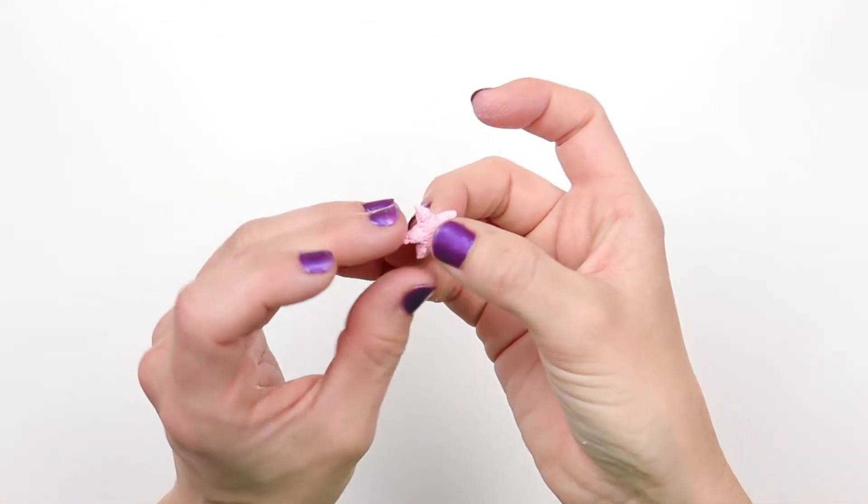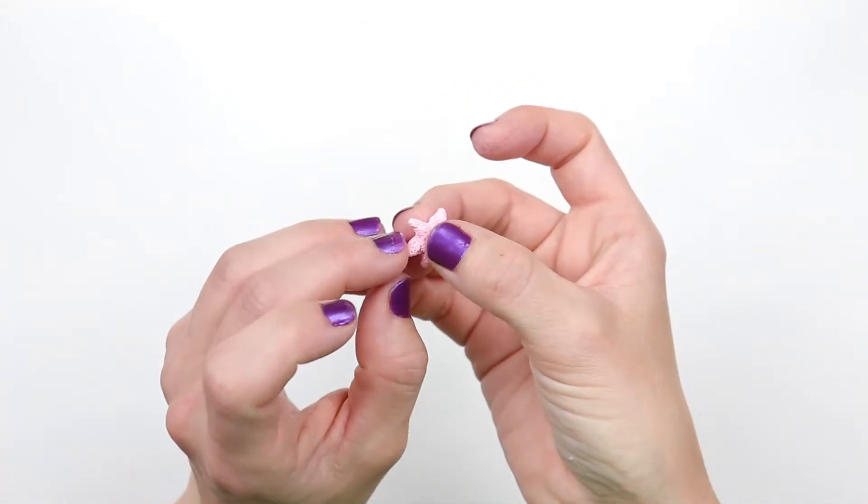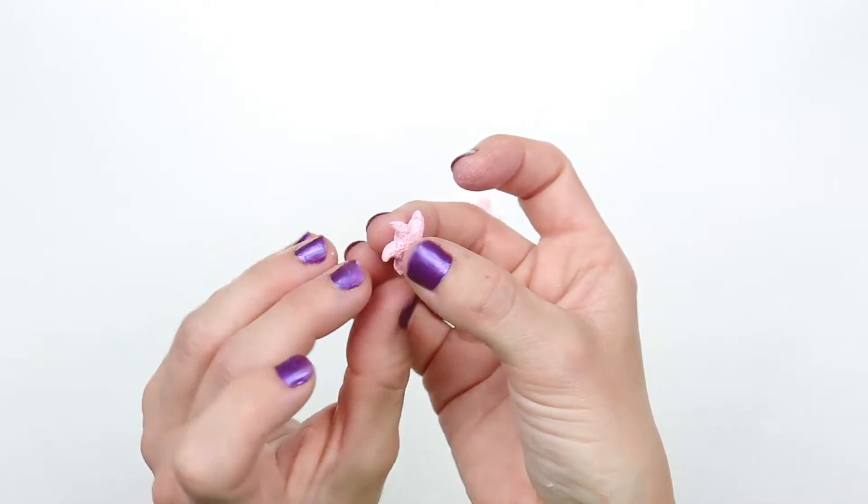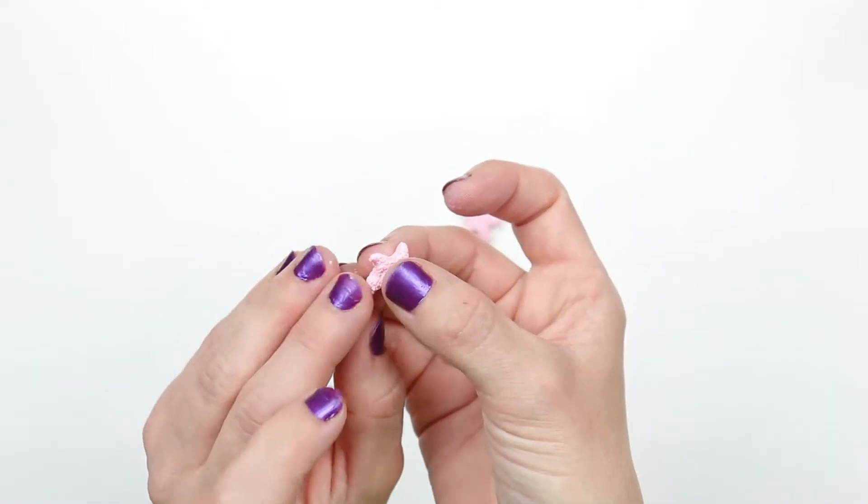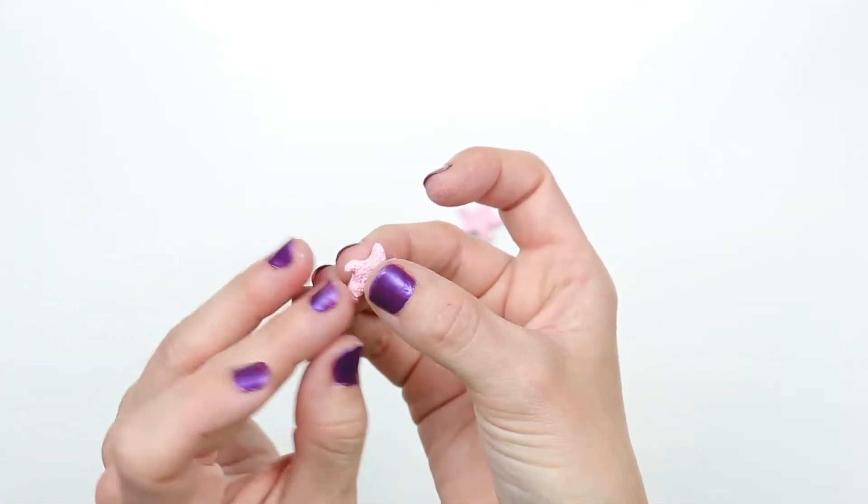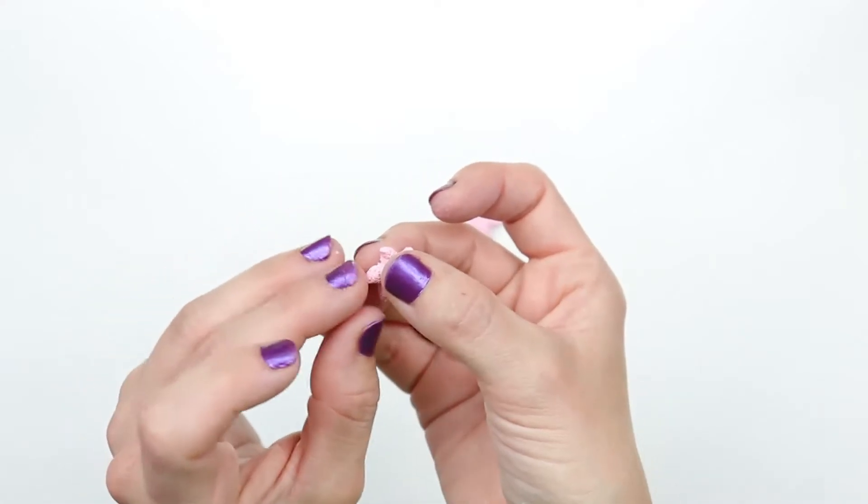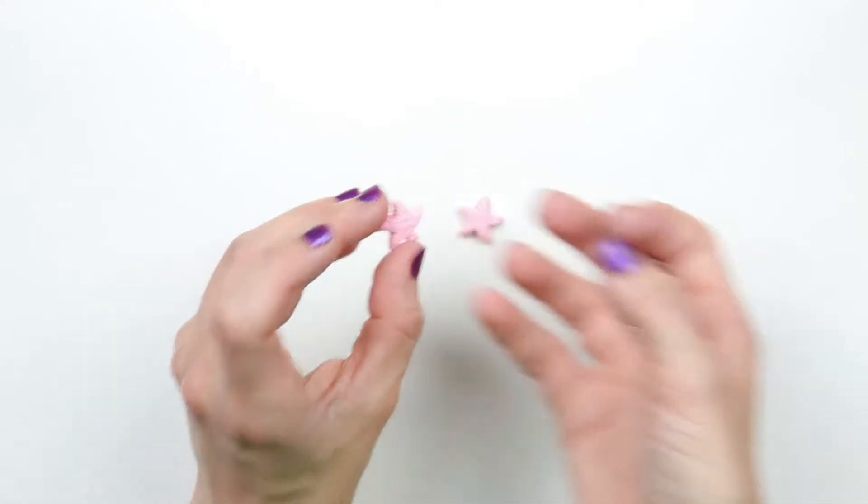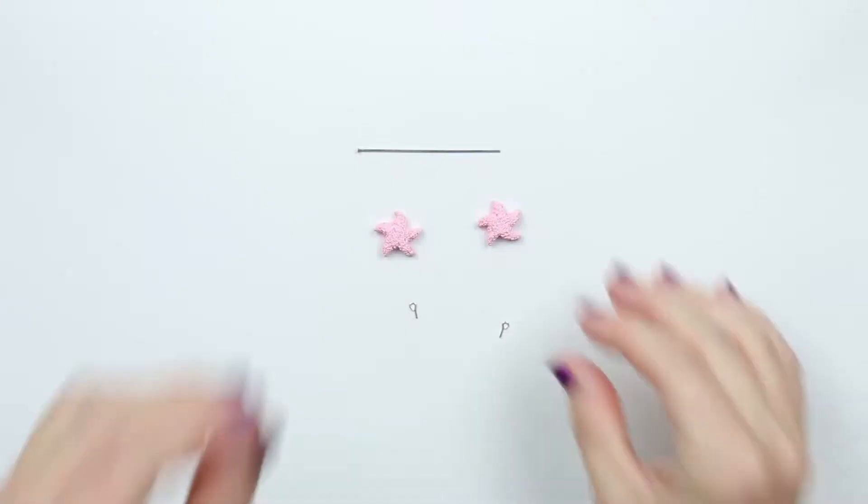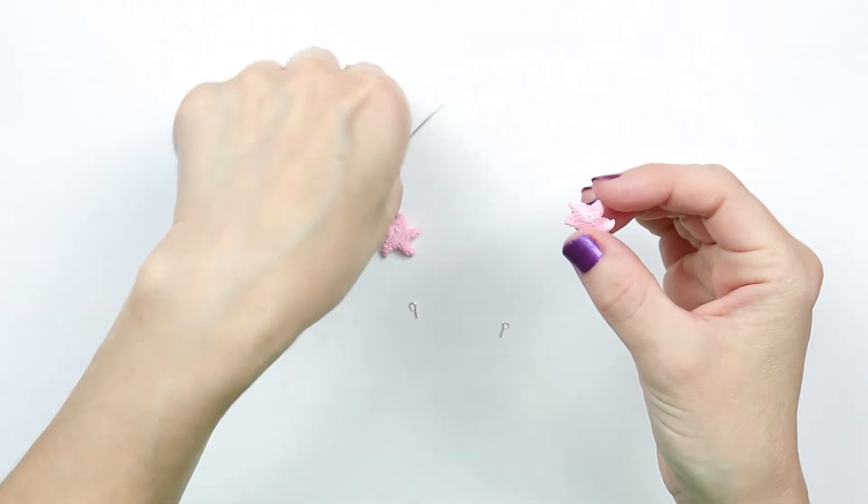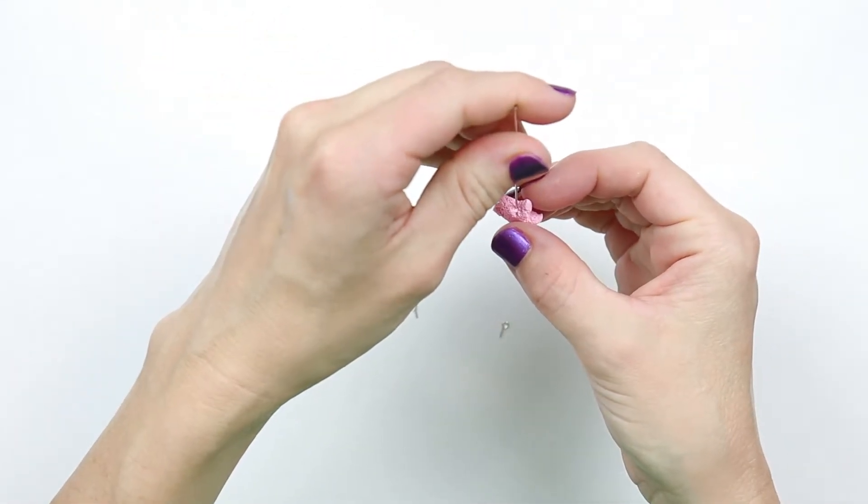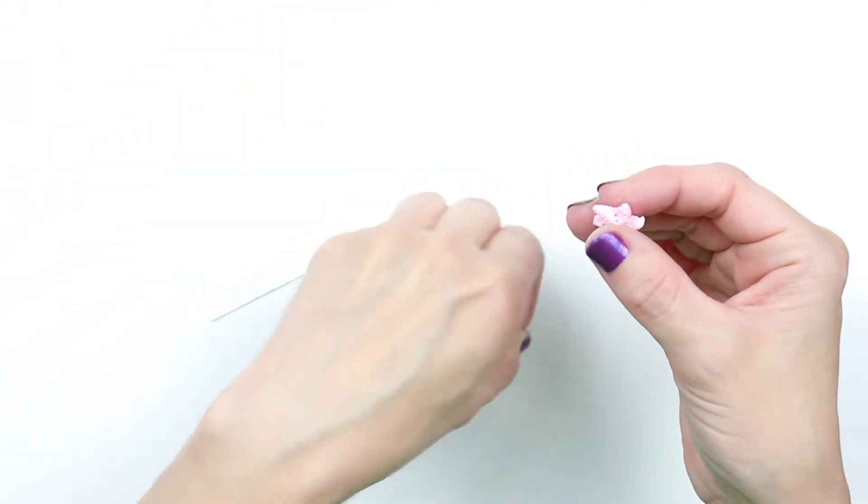Slightly bend each tip of the star. Be sure that they are all pointing in the same direction. This is just to give the starfish character. Pre-poke the holes for your eye hooks and then place the eye hooks in.